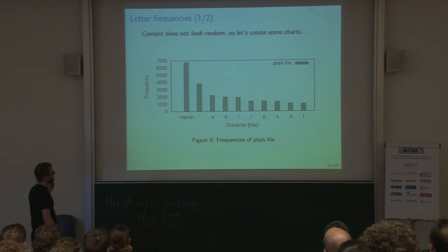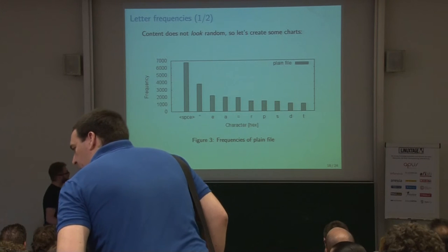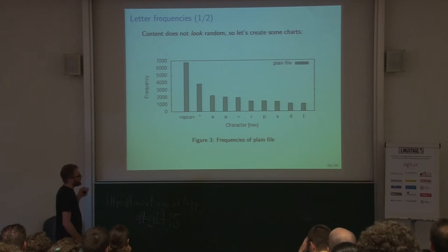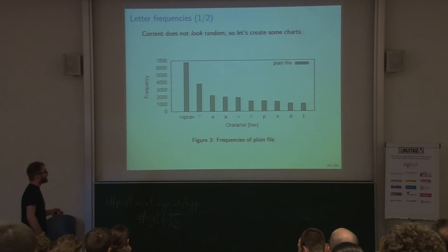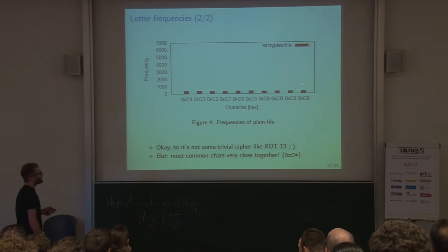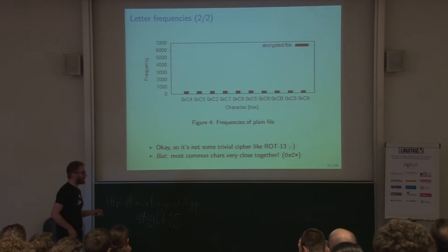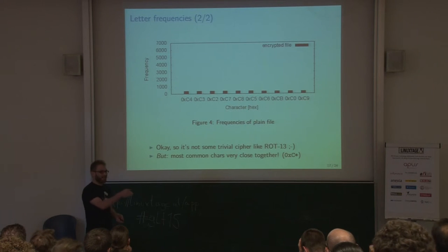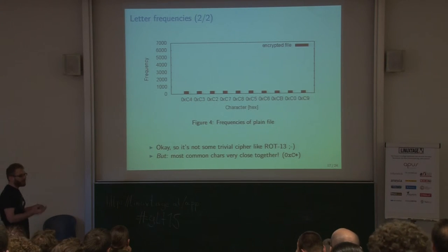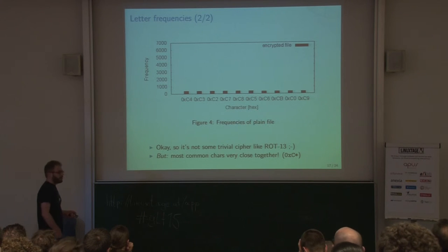Let's do a letter frequency analysis with charts. The plain text XML file shows a lot of spaces and 'e' is very common — standard for an XML file. The encrypted file looks kind of properly randomly distributed. But we notice the most common bytes all start with 'C' in hexadecimal — they all start with 0xC-something — which is not normal for random output.